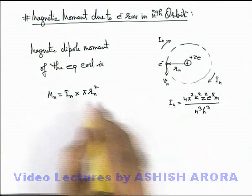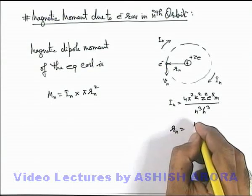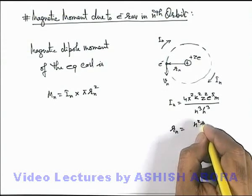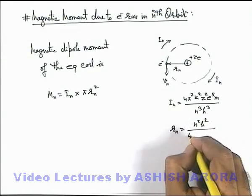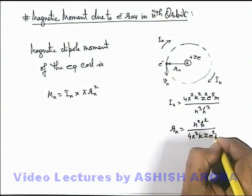Now if we substitute the value of i-n and r-n, also we have calculated as n square h square over 4 pi square k z e square m.